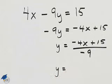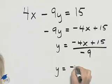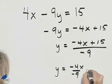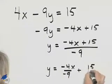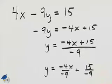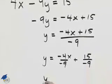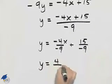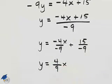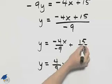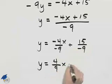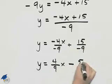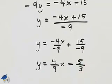We'll simplify this further by writing negative 4x over negative 9 plus 15 over negative 9 and then we'll simplify in one more step. Negative 4 over negative 9 is 4 ninths times x plus 15 over negative 9 will give us a negative and 3 goes into 15 5 times, 3 goes into 9 3 times.